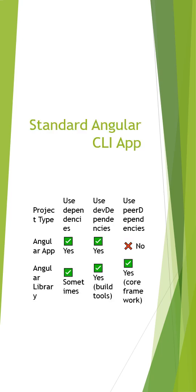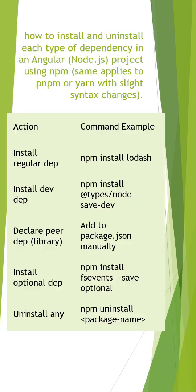If you have a standard Angular CLI app, it uses dependencies and dev dependencies. It does not have any library, so peer dependencies are not required at that time. But if there is a library, then peer dependencies become very important.